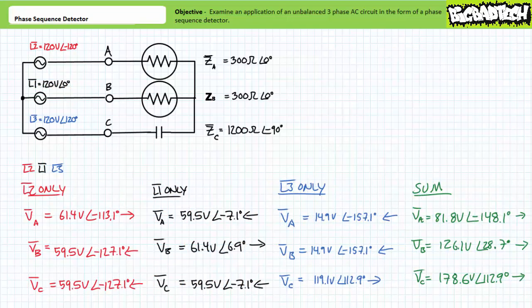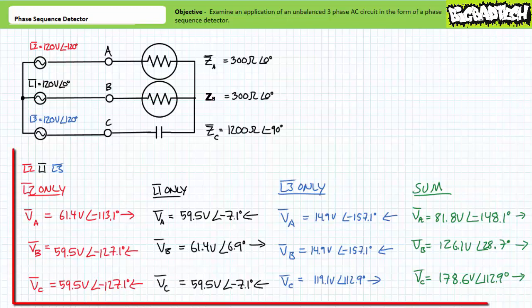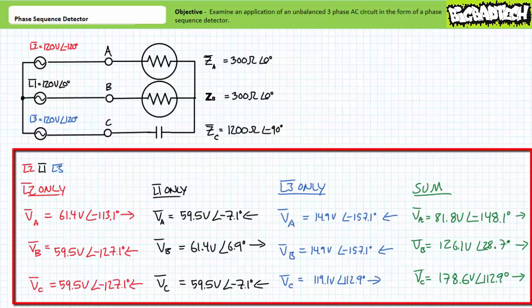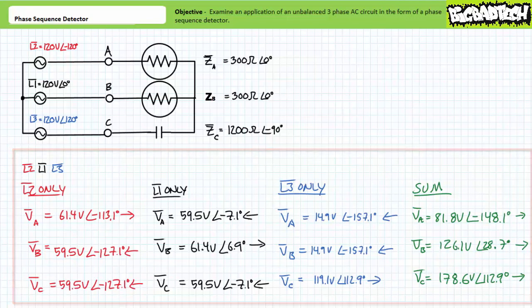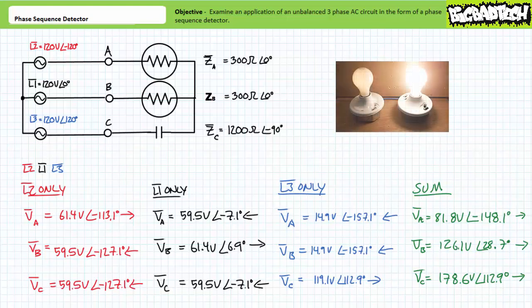Here are the results you'd observe when L2 is landed on terminal A, L1 is landed on terminal B, and L3 is landed on terminal C. As anticipated, given the calculated voltage differentials, it should be obvious that light B would be brighter than light A — a clear indicator that the phase sequence is BAC and not ABC.